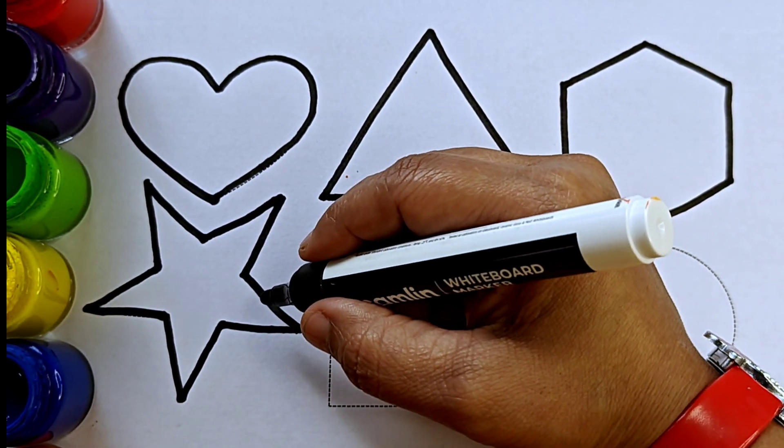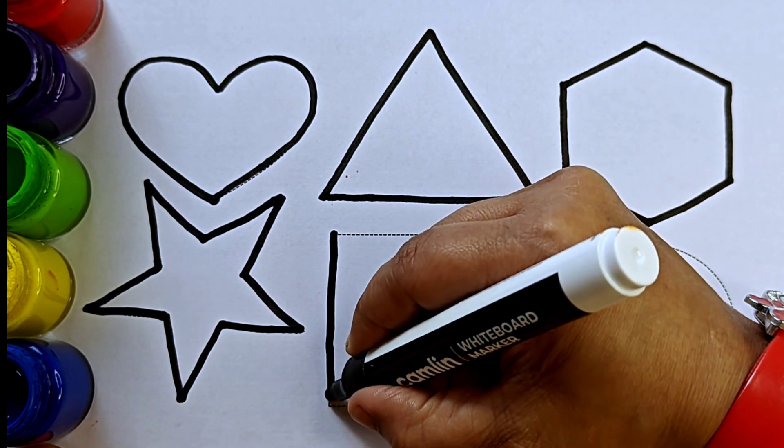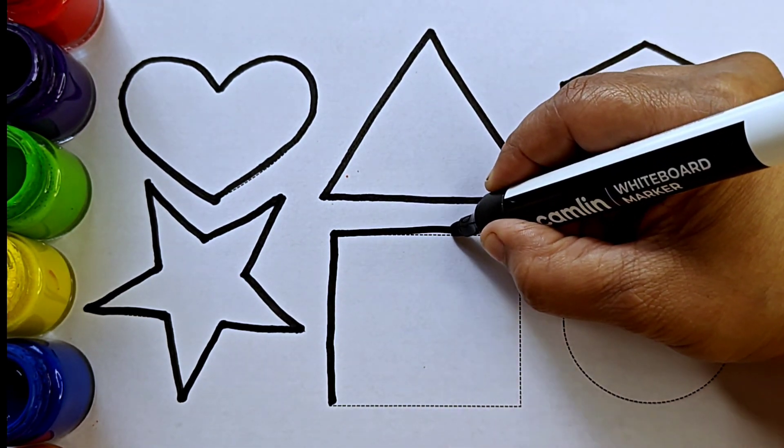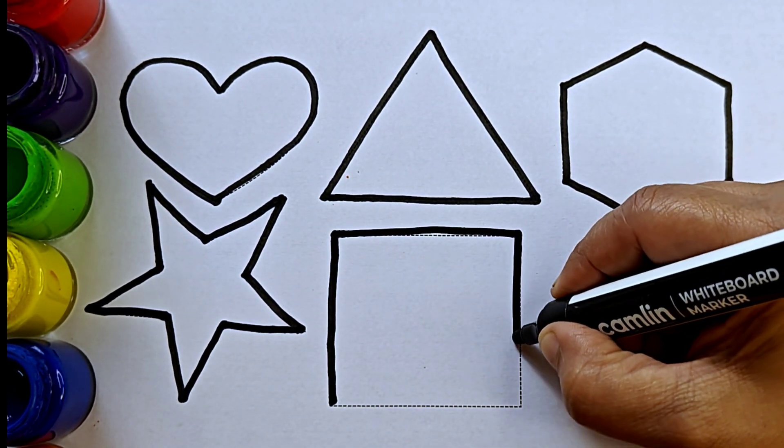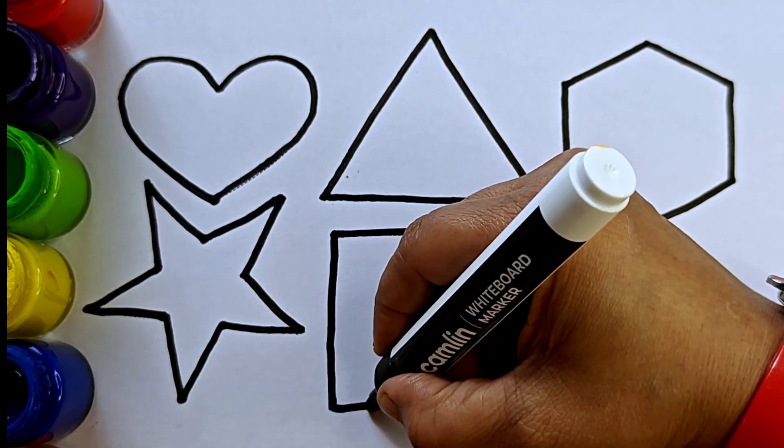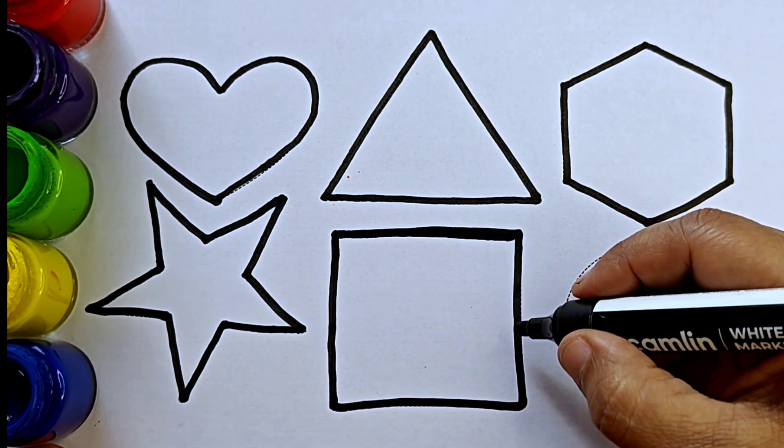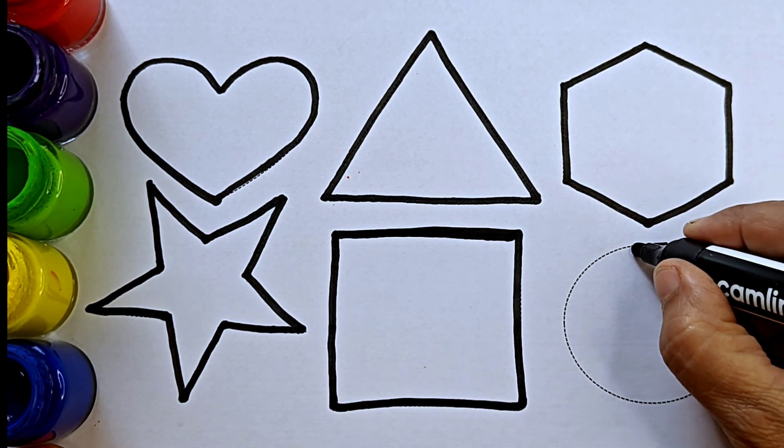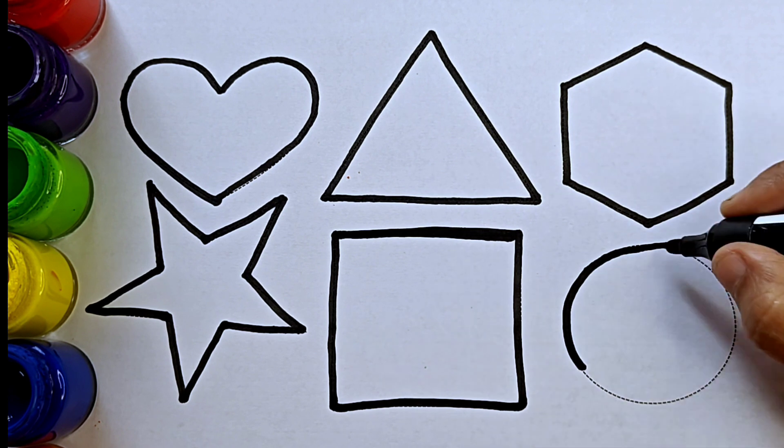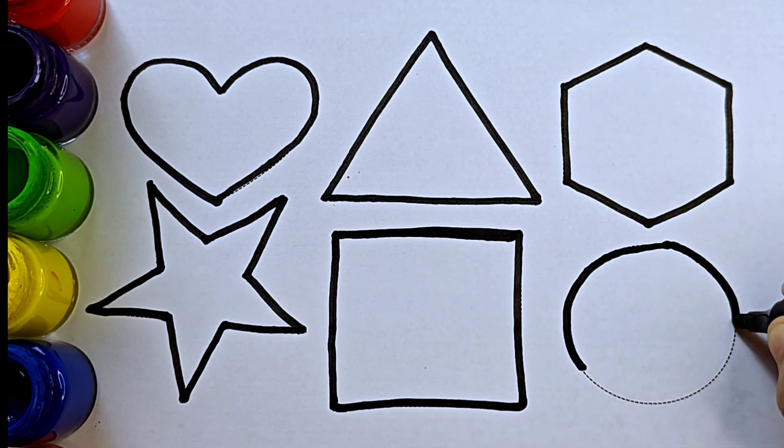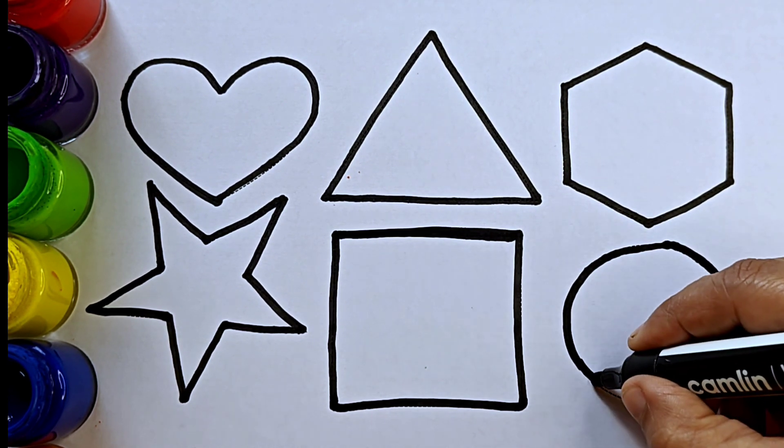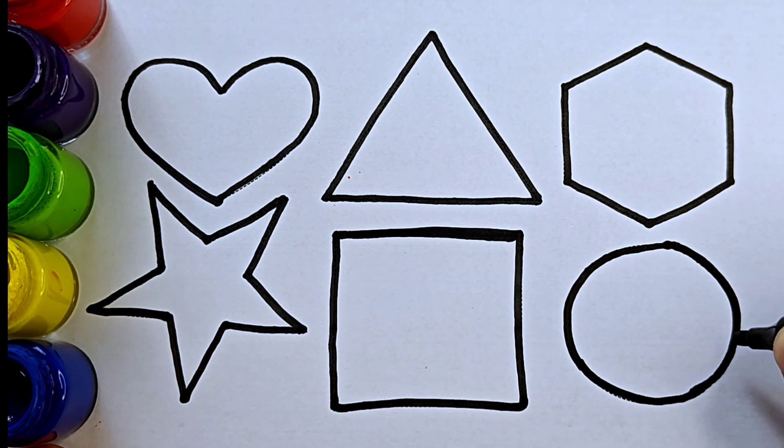This is five pointed star. This is square. This is circle.